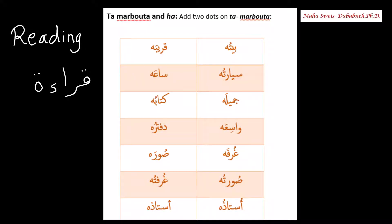More practice on reading, but this time the first step is to distinguish between tamar buta and ha. Whatever you see tamar buta, you have to add two dots — I'm missing two dots somewhere.